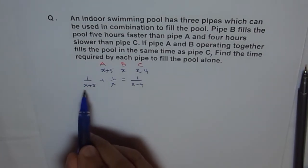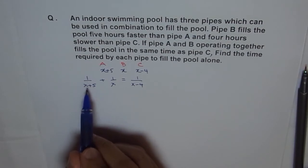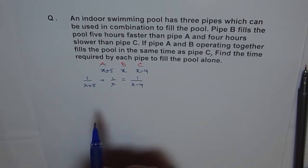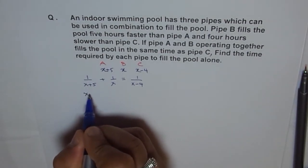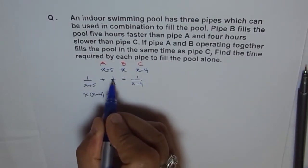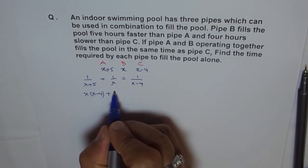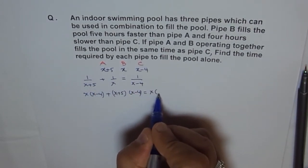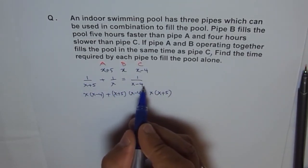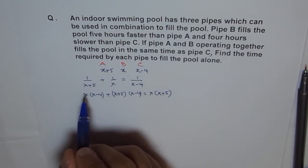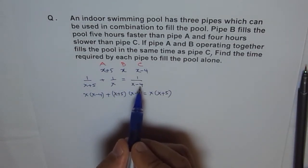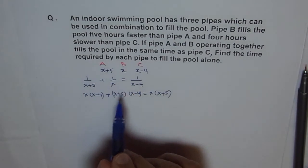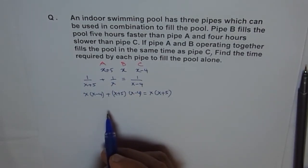First, get rid of the denominators — no fractions. Multiply every term by X plus five times X times X minus four. The denominators cancel out: on the left we get X times X minus four plus X plus five times X minus four, and on the right we get X times X plus five. We translate our rational equation into a polynomial expression.